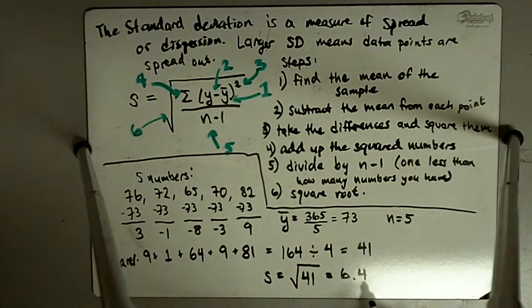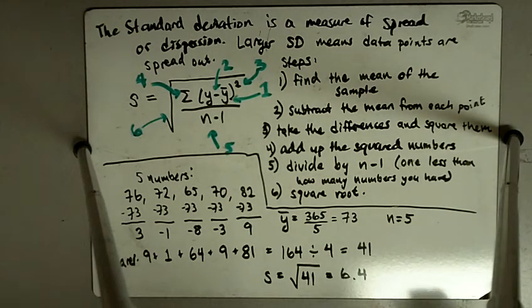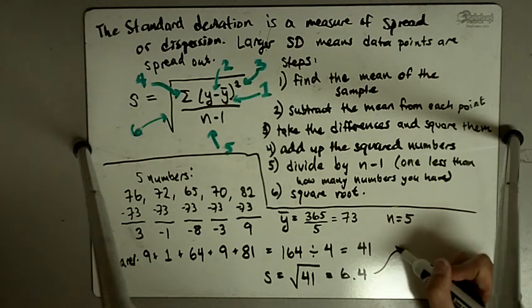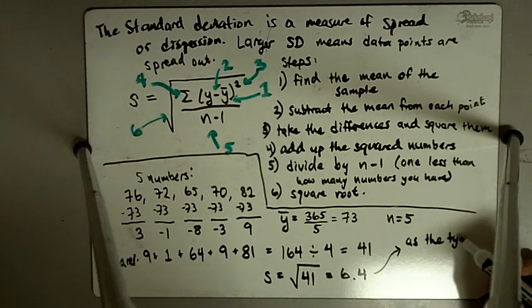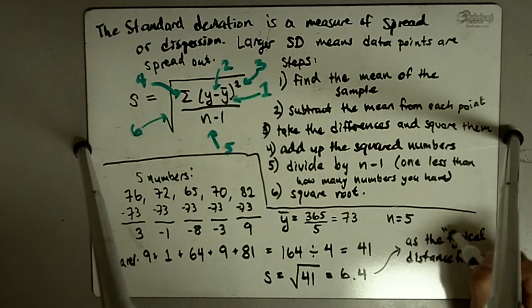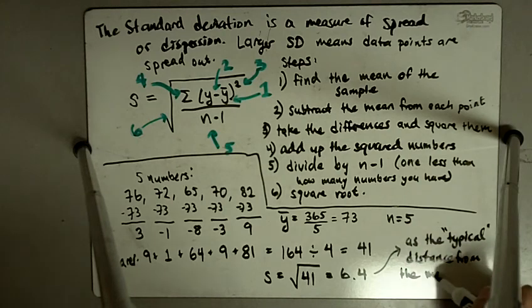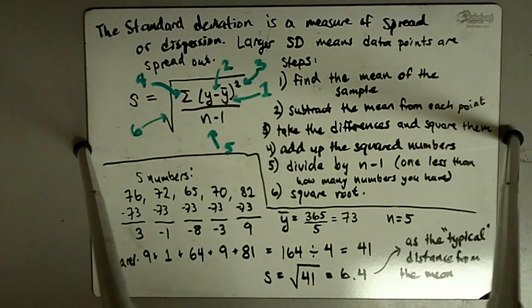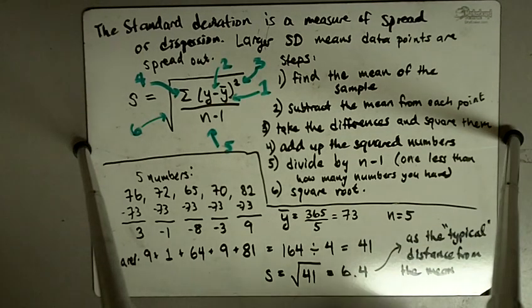This here is the standard deviation 6.4, and it's a measure of spread. So this means that it can be loosely thought of as the typical distance from the mean. Now, typical is a loose word, but it kind of tells you about how far away your data points are from the mean. The mean is the center, or the balancing point, of your data set. And the standard deviation tells you about how spread out those numbers are, about how far away they are from the mean. Or if the standard deviation is small, it tells you about how close together and clumped together the numbers are to the mean. So it's a way of comparing spread, or dispersion, between two sets of data. And that is the standard deviation. We'll see you in the next one.